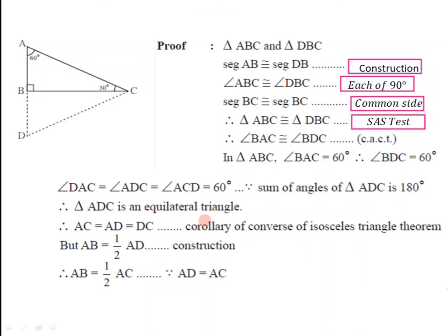For an equilateral triangle, all sides are also congruent. That is, side AC is congruent to side AD is congruent to side DC. Here we have constructed AB and BD to be congruent, so the length of segment AB must be half of the length of segment AD. So we can write AB is equal to half of AD, which is because of construction. Instead of AD we can write AC, because AC is equal to AD is equal to DC. That's why AB is equal to half of AC.